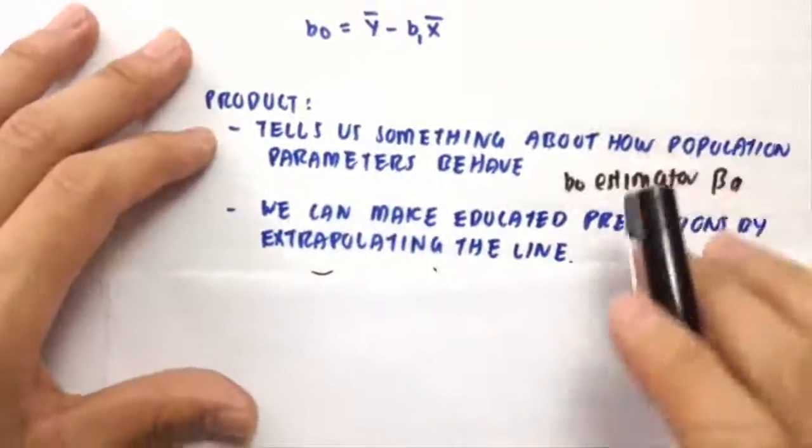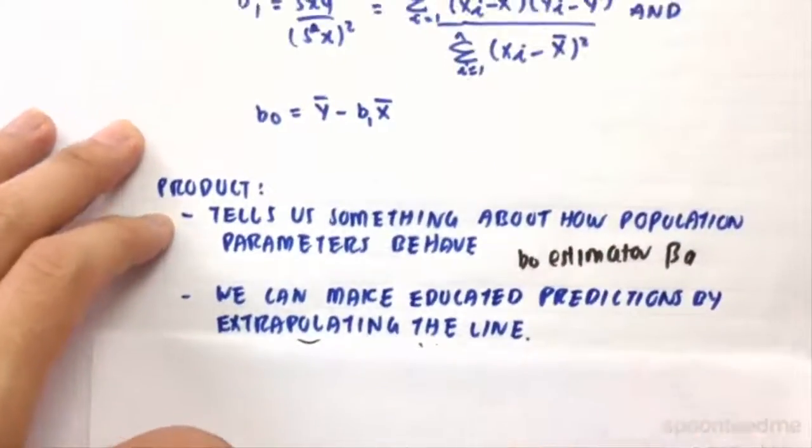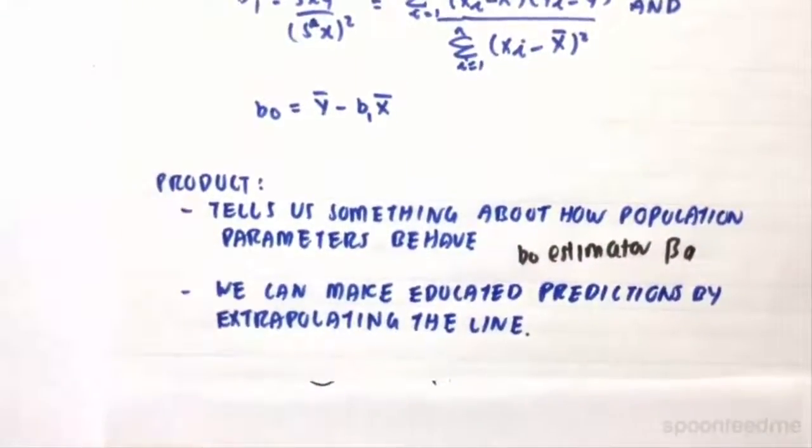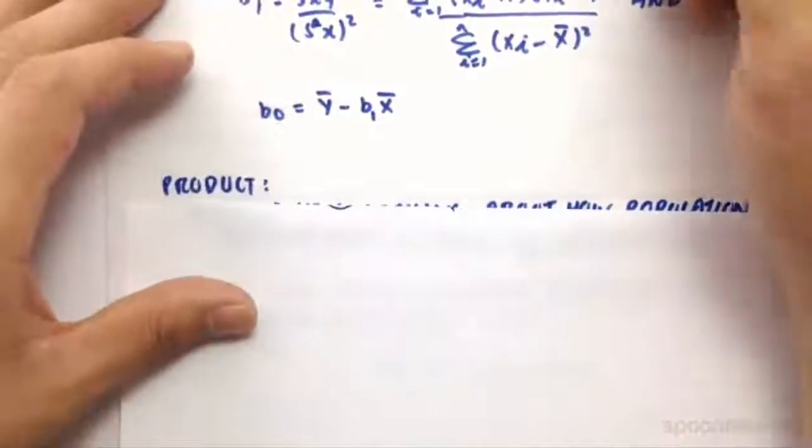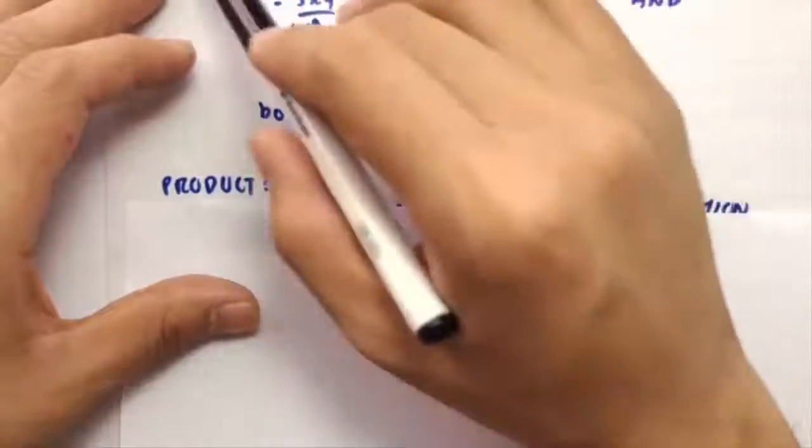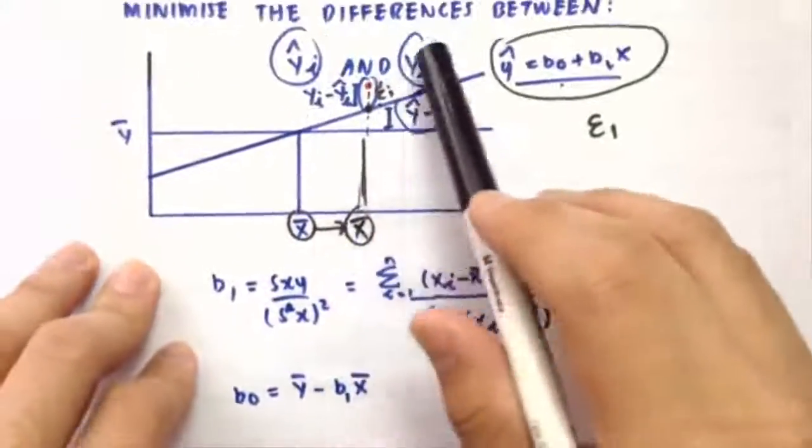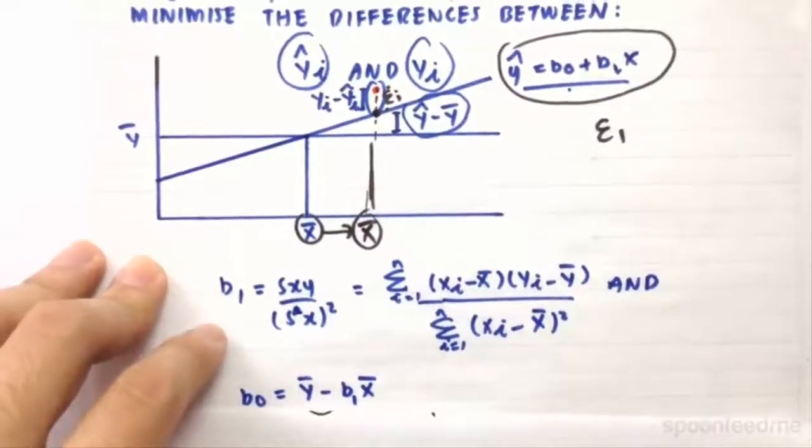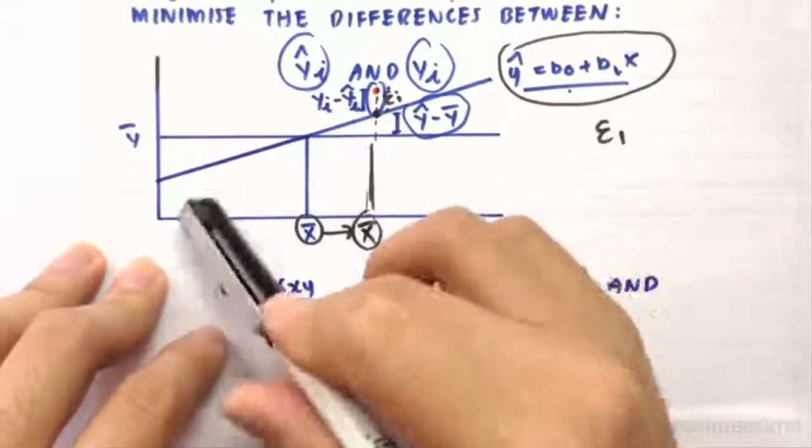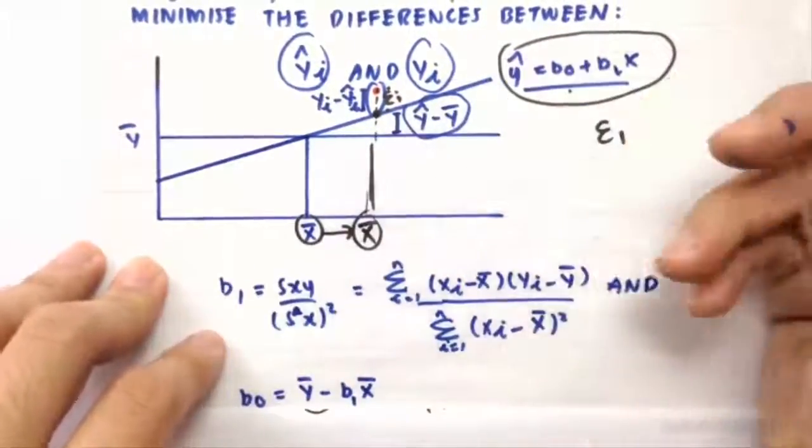So as long as we don't, when we extrapolate the line, as long as we don't, as long as we stay in the area in which the data points were, so the range in which the data points were which created this actual line, we need to stay within there to actually stay within the relevant range so that the model is actually as accurate as possible.